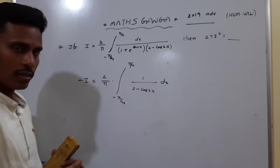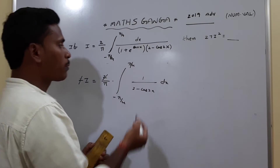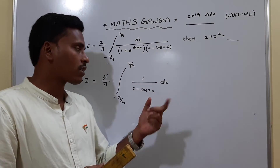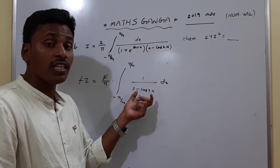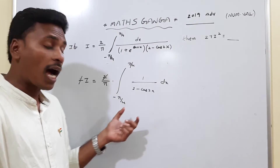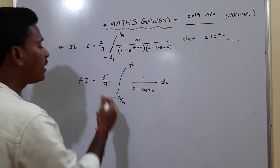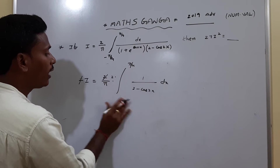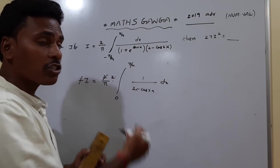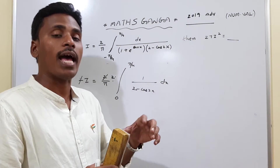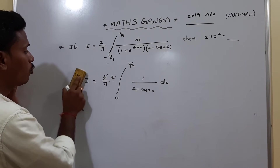So 2I equals 2 by π of the integral from minus π/4 to π/4 of 1 by (2 minus cos 2x) dx. After canceling the 2, I equals 1 by π of that integral. Another key observation: 1 by (2 minus cos 2x) is an even function. Since it is even and the integral runs from minus π/4 to π/4, we rewrite it as 2 times the integral from 0 to π/4.